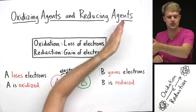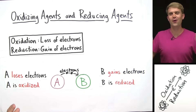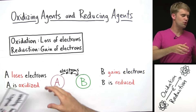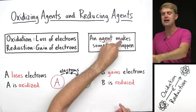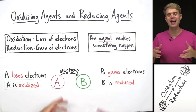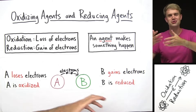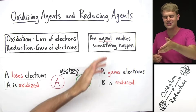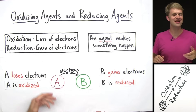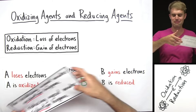So that's oxidation and reduction. But here, we're talking about agents — oxidizing and reducing agents. What's an agent? Well, the word has a bunch of different meanings, but in this situation, an agent makes something happen. Think of like the agent for a movie star — they help the actor get jobs, they help the actor get into movies. An agent makes things happen for that movie star.